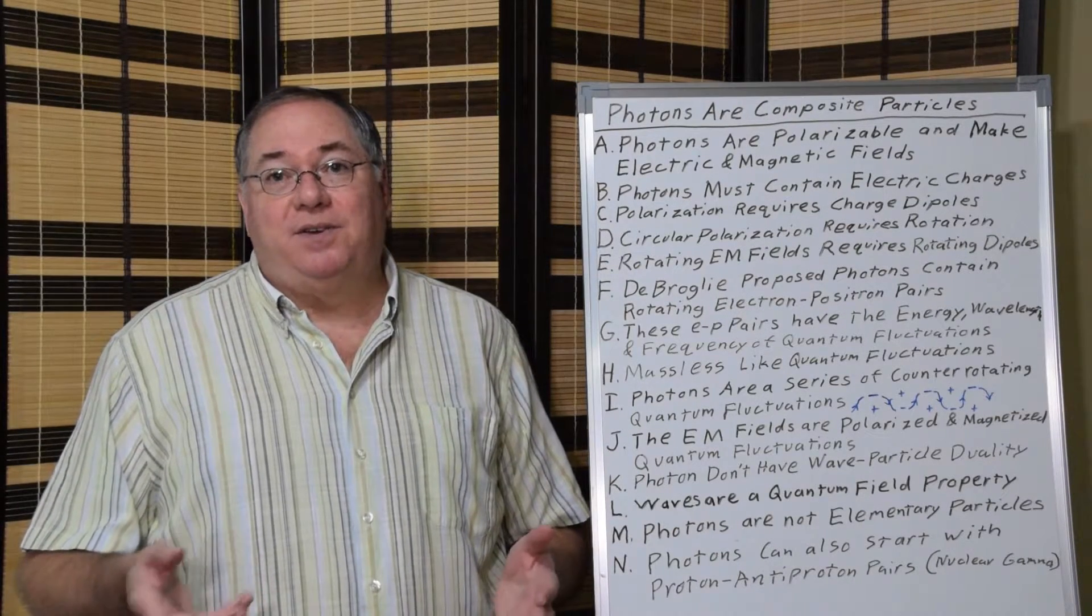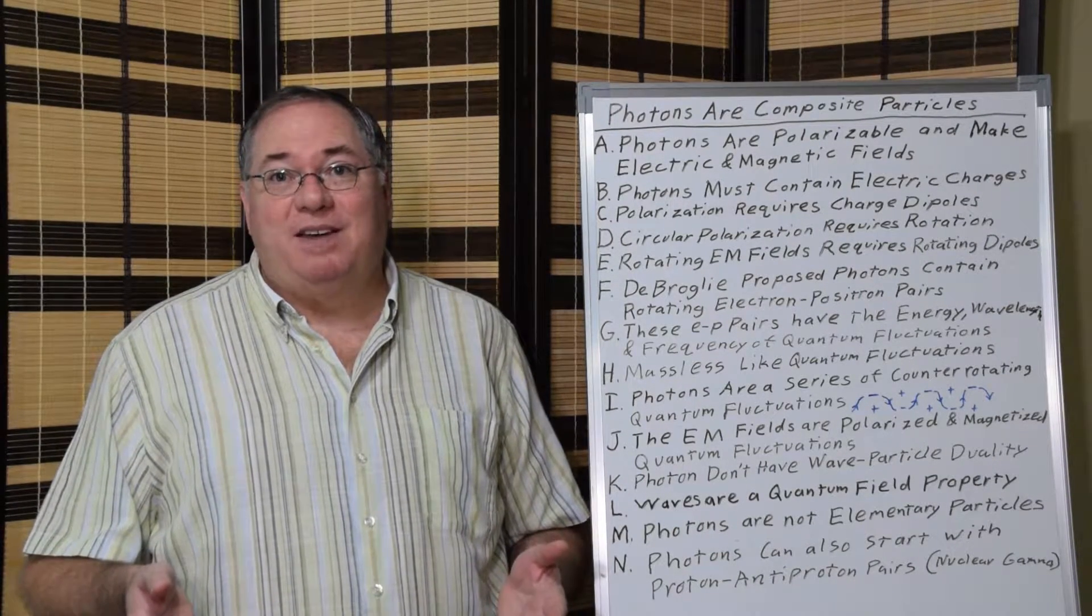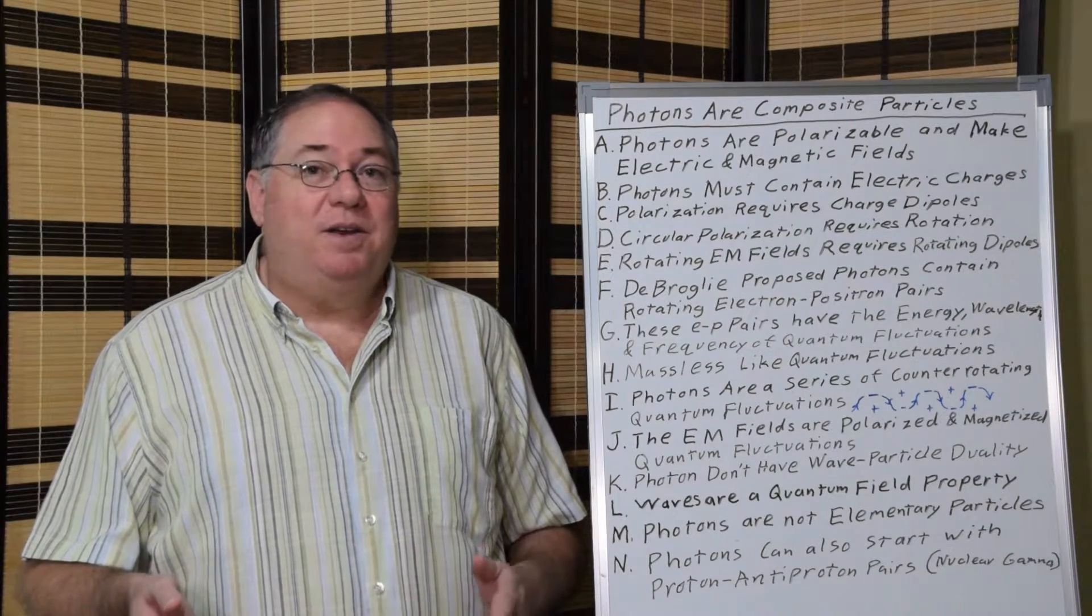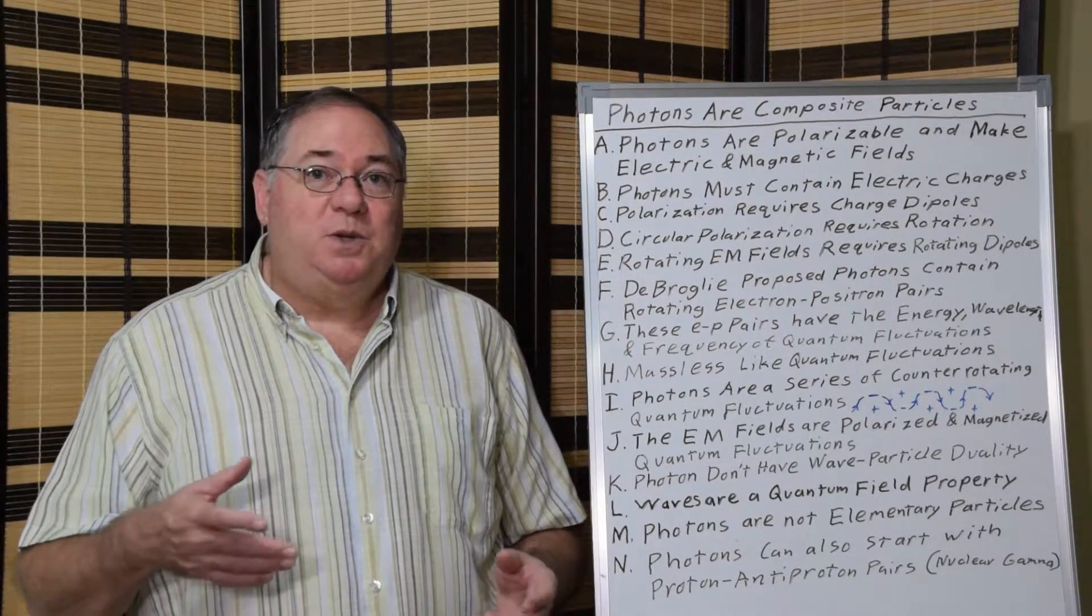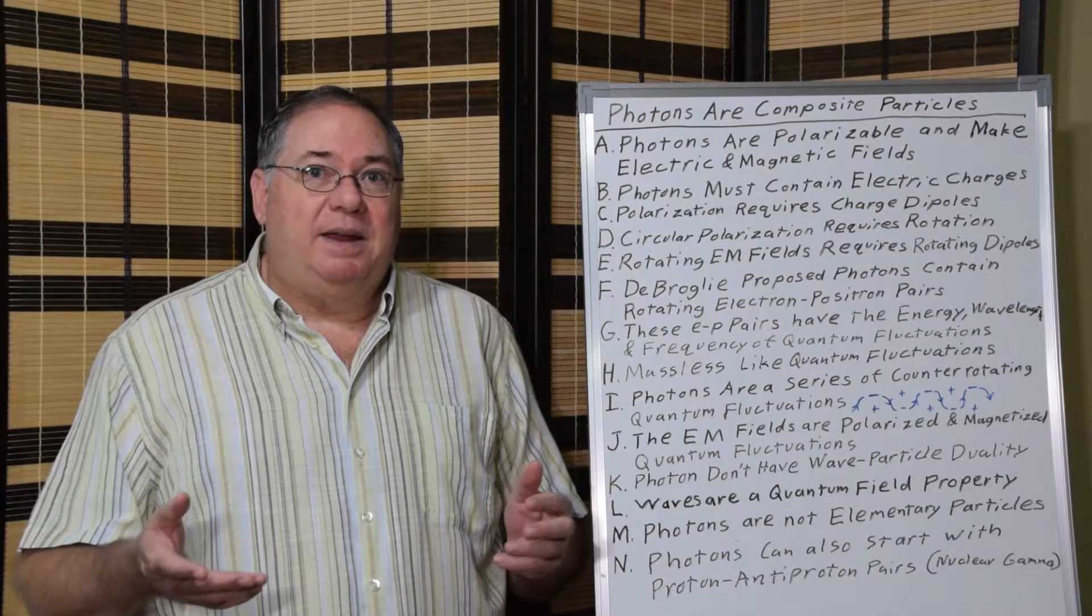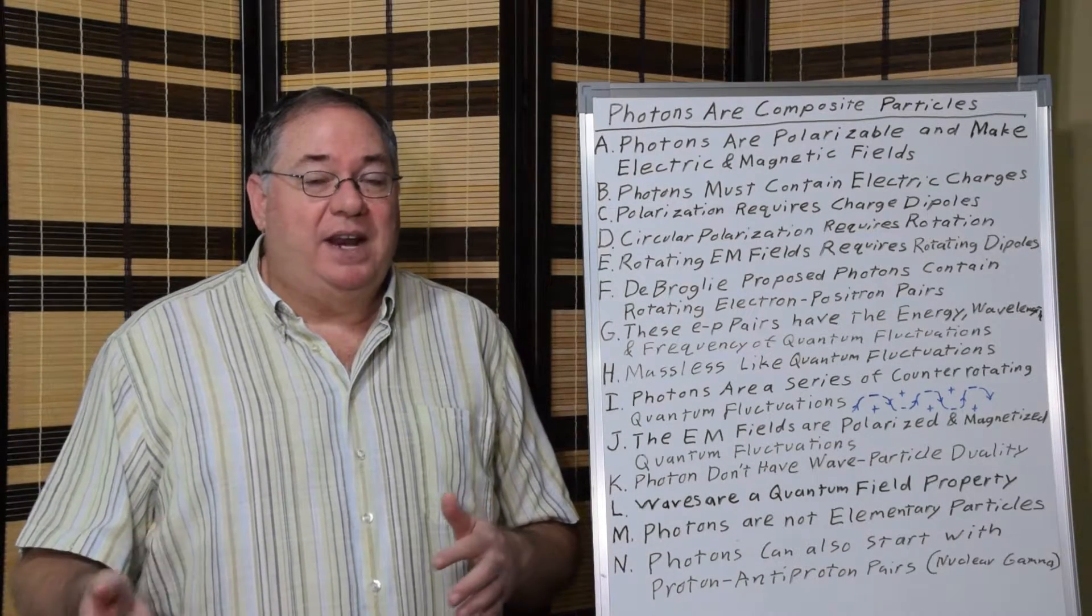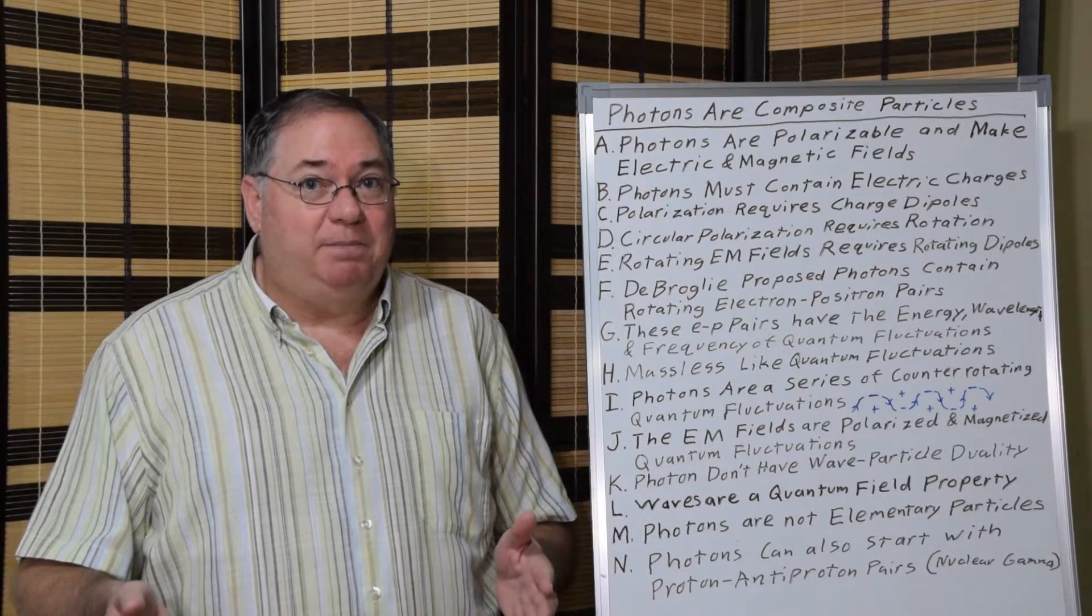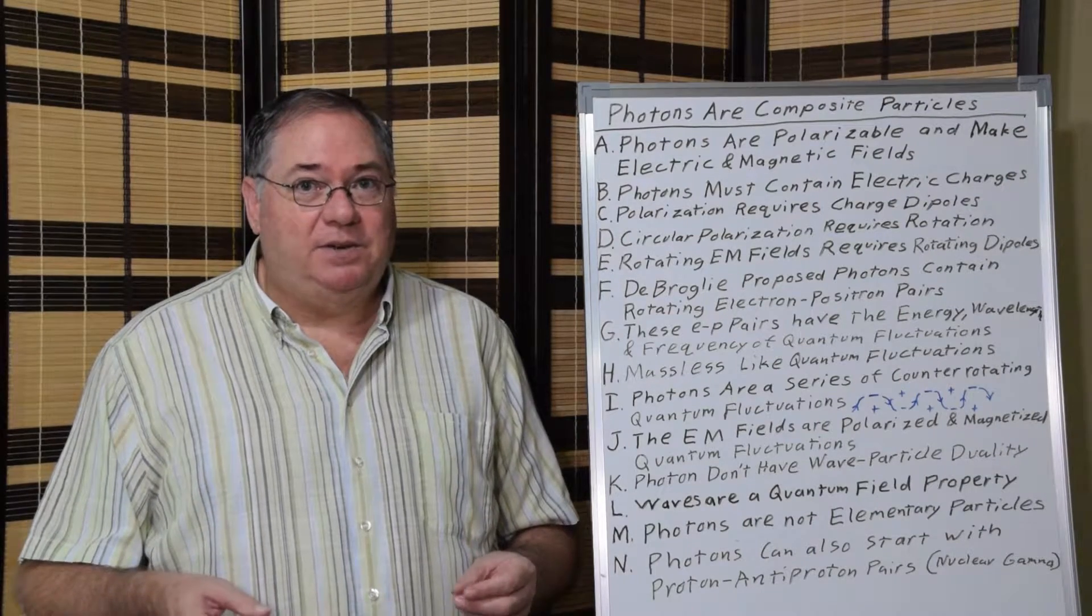The problem was that electrons and positrons have mass, and he couldn't reconcile that. And this was before physicists had recognized you can have electron-positron pairs, quantum electron-positron pairs that are massless.